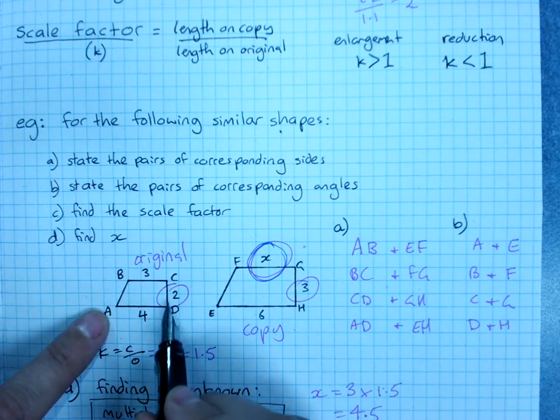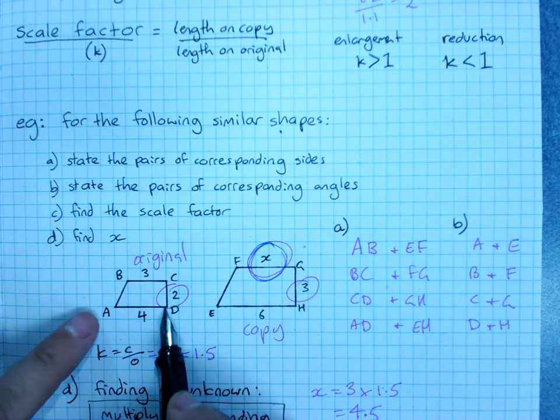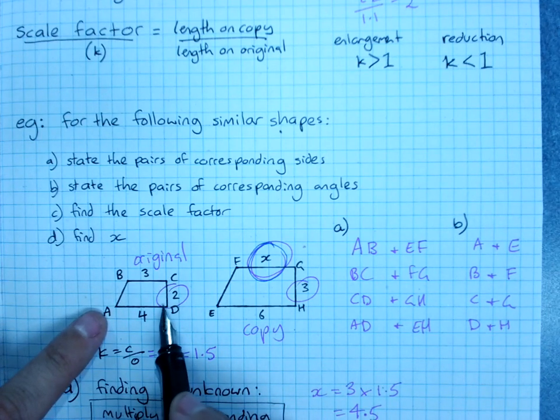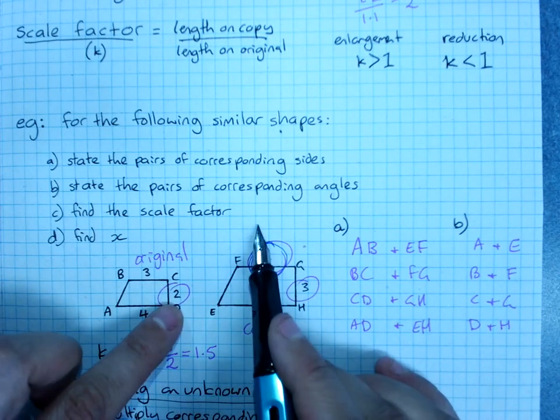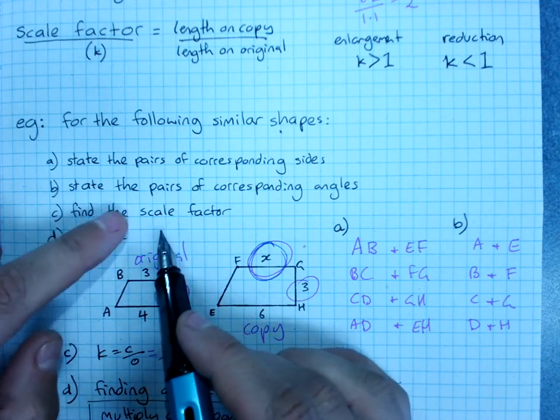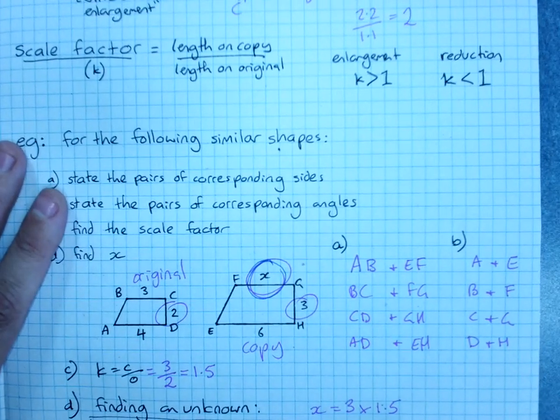I would multiply all the sides by 3 and draw it exactly as it is there, with the angles the same, but with the new sides. So this would become 12, this would become 6, this would become 9, and then I'd join up this side here. So you can use the scale factor to make a new copy.